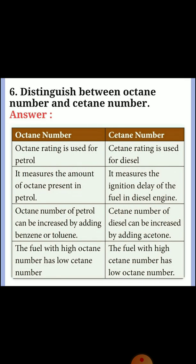Sixth question: distinguish between octane number and cetane number. Answer: Point 1 — Octane rating is used for petrol; cetane rating is used for diesel. Point 2 — Octane number measures the amount of octane present in petrol; cetane number measures the ignition delay of the fuel in a diesel engine. Point 3 — Octane number of petrol can be increased by adding benzene or toluene; cetane number of diesel can be increased by adding acetone. Point 4 — The fuel with a high octane number has a low cetane number, and the fuel with a high cetane number has a low octane number.